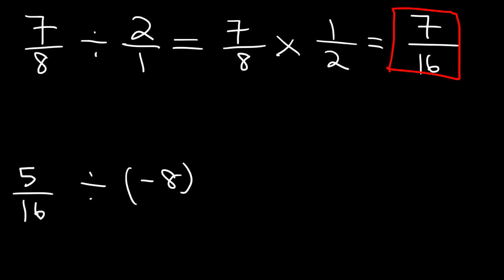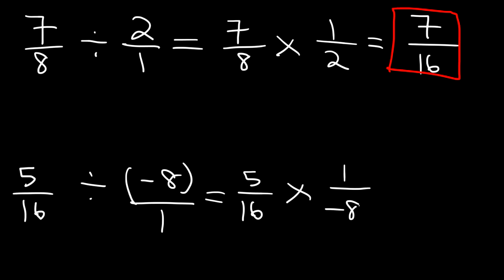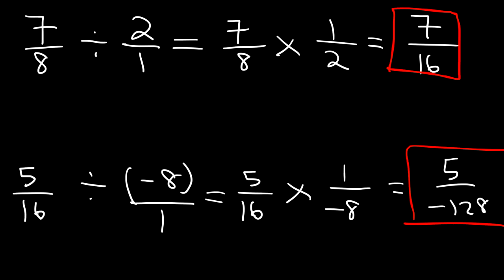For the next example, we do the same thing. 5 over 16 divided by negative 8 over 1. Rewrite it as 5 over 16 times 1 over negative 8. 5 times 1 is 5, and 16 times negative 8 is negative 128. So the answer is 5 over negative 128. You can also write it as negative 5 over 128. These two expressions are equivalent.